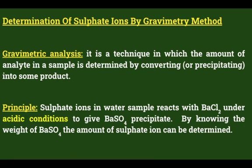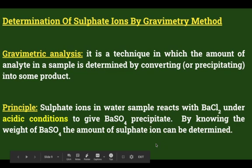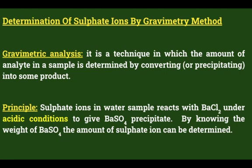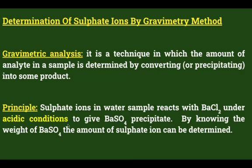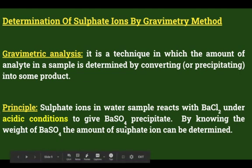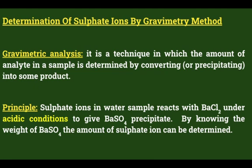Acidic conditions are used because water samples contain not only sulfate ions but also chloride ions, carbonates, bicarbonates, and phosphates. Upon addition of barium chloride, only barium sulfate should precipitate. If acid is not added, barium carbonate and barium phosphate will also get precipitated, making it difficult to determine sulfate ion concentration alone. So acidic conditions ensure that only barium sulfate precipitates.